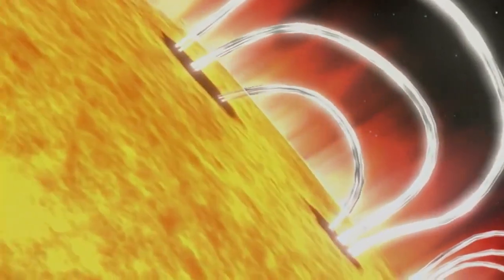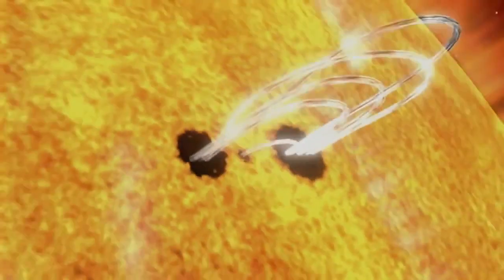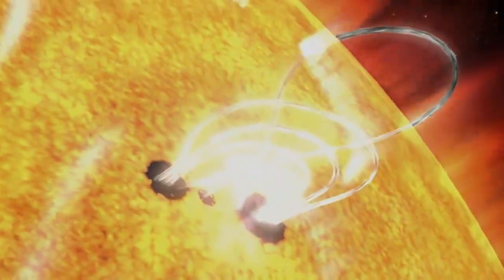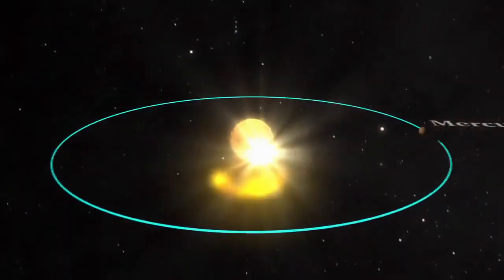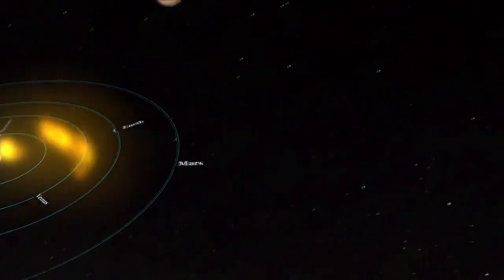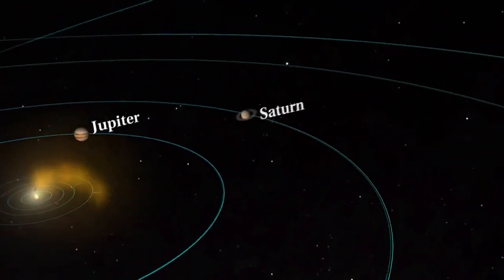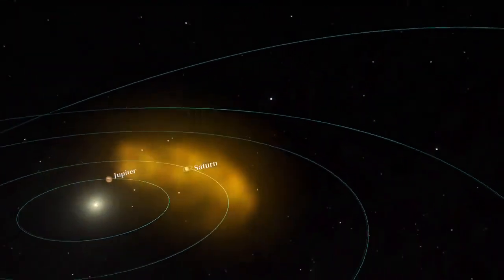The number of sunspots is important because sunspots are the visual markers of where powerful magnetic fields have emerged from the Sun's interior. These magnetic fields power solar flares and coronal mass ejections, which can affect Earth and other objects in the solar system. As the sunspots increase, so does the frequency and severity of flares and CMEs.